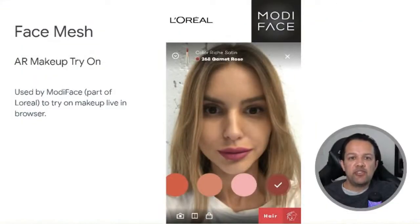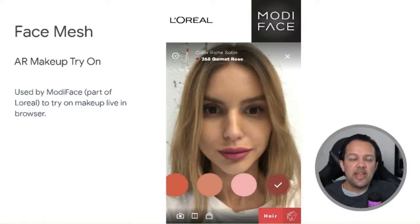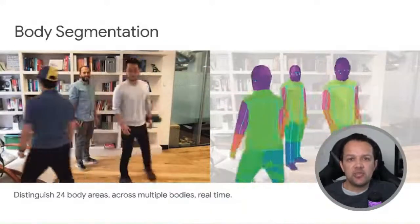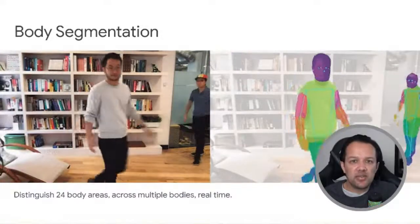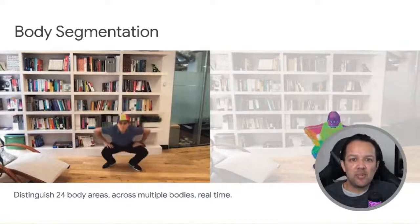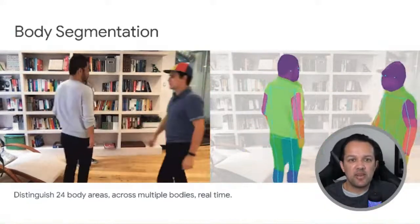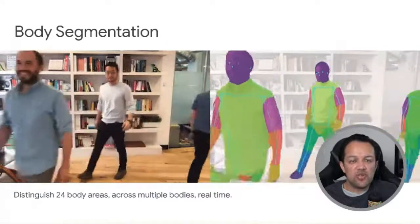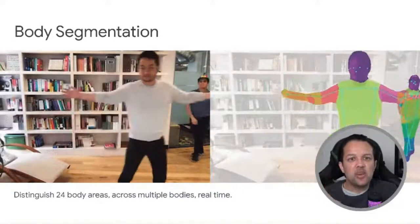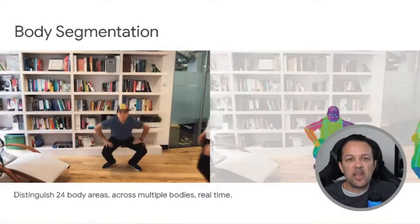Here we see a demo by Modiface, part of the L'Oreal group, for AR makeup try-on. The lady is not wearing any lipstick — our Face Mesh model is combined with WebGL shaders to augment the color chosen onto the person's lips in real-time in the browser. Next up, we've got body segmentation. This model can distinguish 24 body areas across multiple bodies all in real-time. Notice from the image how the bodies of each person are correctly segmented with different colors representing different body parts. We also get pose estimation — those blue lines — to estimate where the skeleton is, so we can do things like gesture recognition and much more.